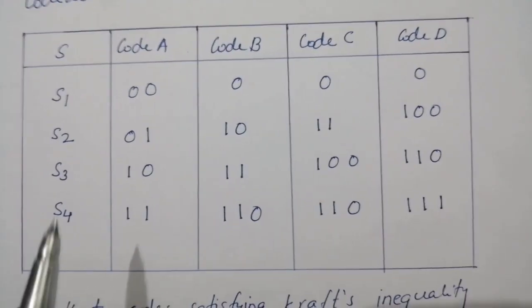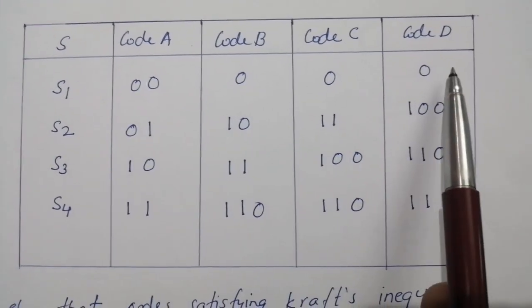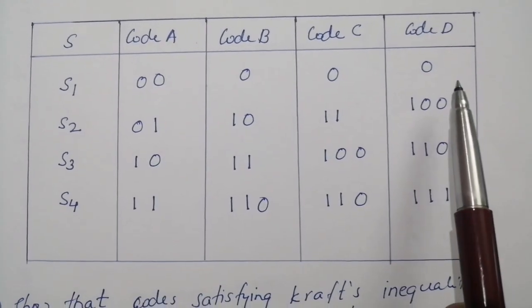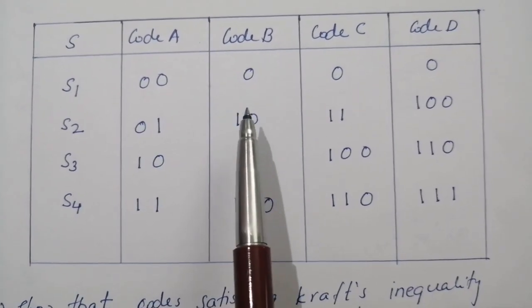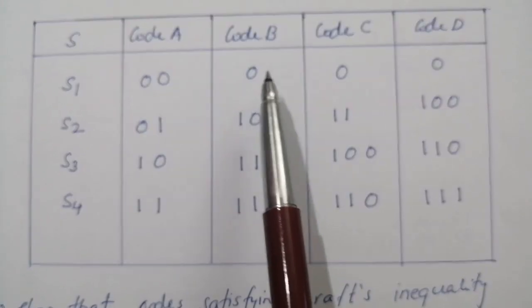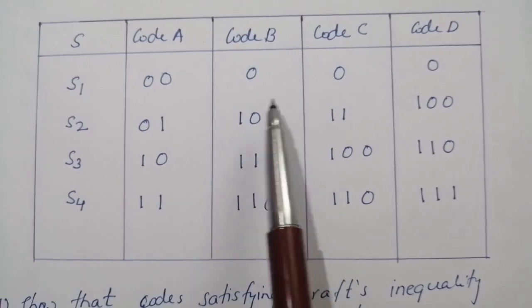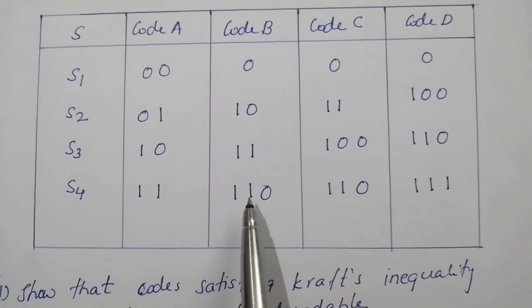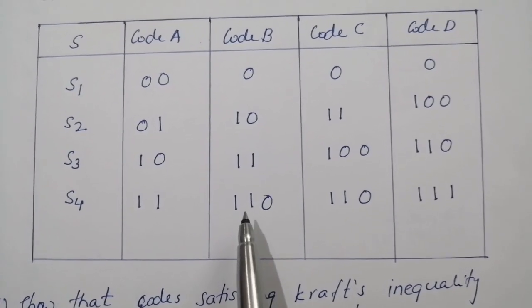So if you observe these coding schemes, we can see that code A and code D are uniquely decodable. At the same time, they satisfy Kraft's inequality also. But coding scheme B is not satisfying Kraft's inequality and it is not a prefix-free code. That is, it is not a uniquely decodable code.